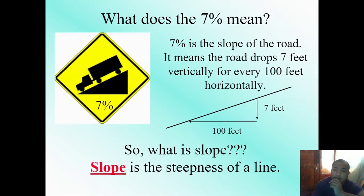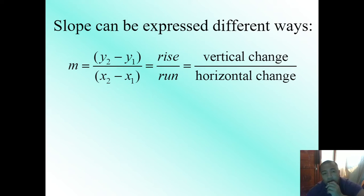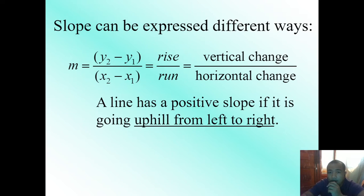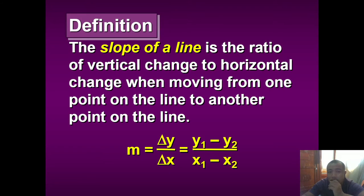Slope is the steepness of a line, and it can be expressed in different ways. Algebraically, slope equals (y₂ - y₁) / (x₂ - x₁). It can also mean rise over run, or vertical change over horizontal change. A line has a positive slope if it is going uphill from left to right. A line has a negative slope if it is going downhill from left to right. The slope of a line is the ratio of vertical change to horizontal change when moving from one point on the line to another.